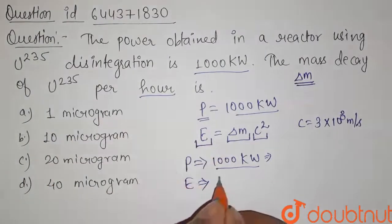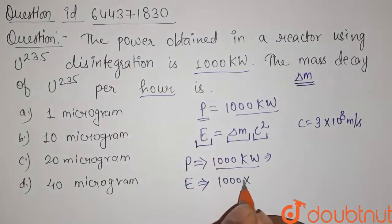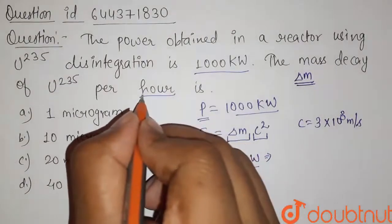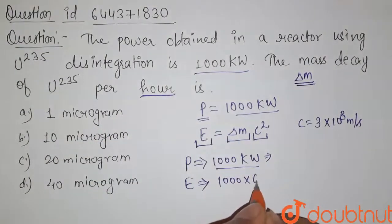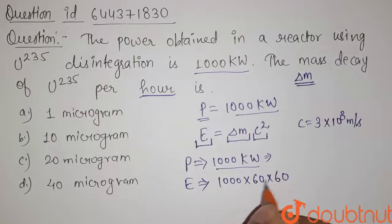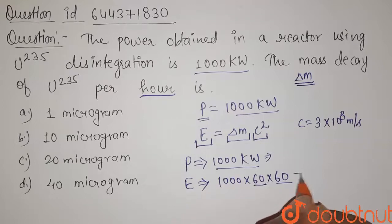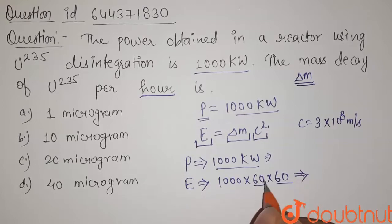...will be given by 1000 times the number of seconds in one hour, so it is given by 60 times 60. That is, one hour has 60 minutes and one minute has 60 seconds. So it is the energy released in this process. Calculate it.